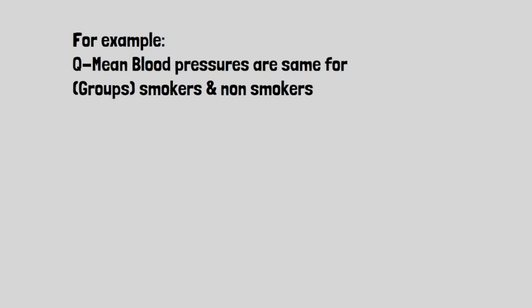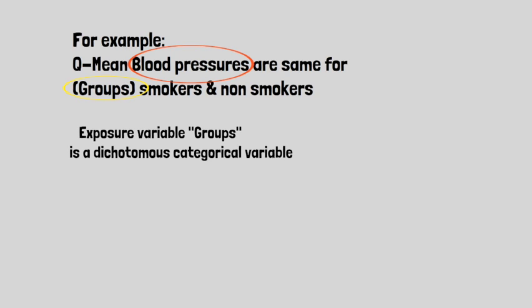For example, if you want to compare the means of a normally distributed dependent or outcome variable, in this case blood pressure, for two independent dichotomous groups, smokers versus non-smokers.